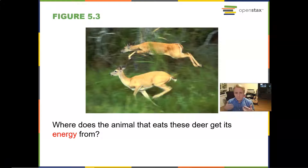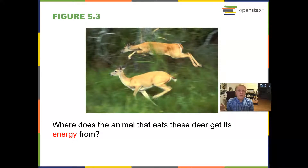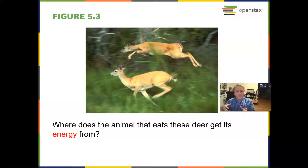Where does the animal that is trying to eat these deer, or the casual hiker who's just walking by — where does the animal that eats these deer get its energy from, fundamentally? Well, it gets it from the sun, because these deer are herbivorous, they are only eating plants. When the mountain lion, or whatever it is that's trying to eat them, catches and eats these deer, it is getting the energy that they got from the sun, from those plants that photosynthesized that energy into sugars.